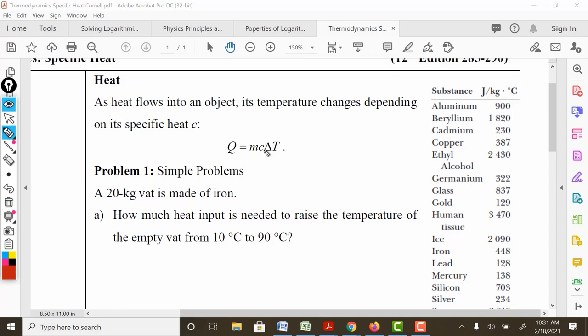So notice that it depends on a few things. This delta T is going to be the change in temperature. In other words, specific heat is not going to be an issue if something is at room temperature and there's no need to change its temperature at all. So this definition of heat is the heat required to change the temperature of a specific object that has a mass.